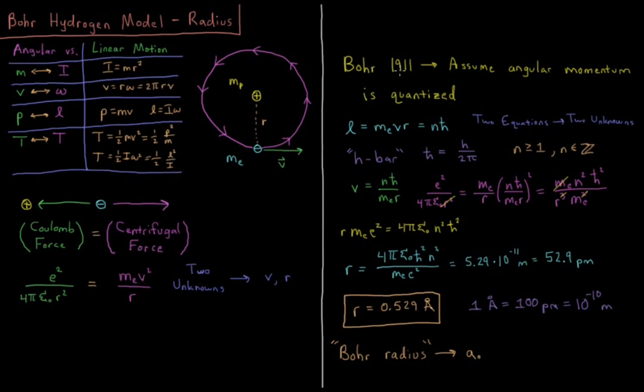Niels Bohr, in 1911, had a hypothesis, and that was to assume that the angular momentum of our electron is quantized. So that means that angular momentum, which equals mass times velocity times radius in perfect circular motion, equals n, an integer, times ℏ.